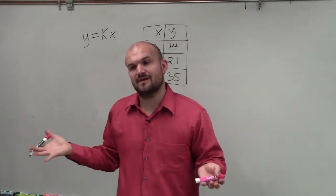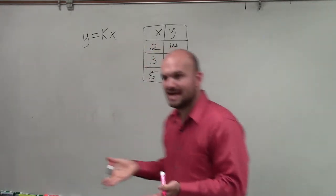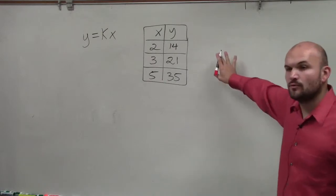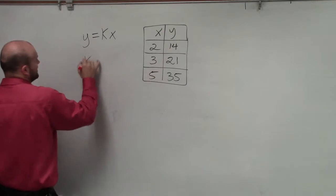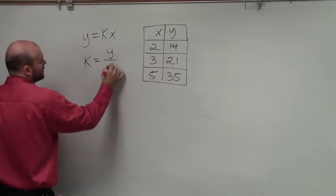So the only thing we have is a constant, which is our k. k represents our constant. Now, we can rewrite this in a different format. We can divide by x on both sides and have k is equal to y over x.